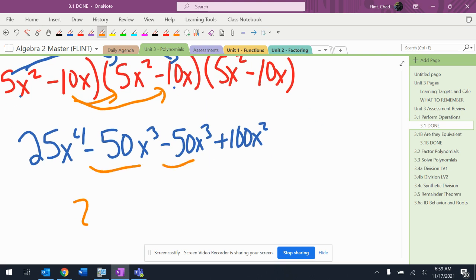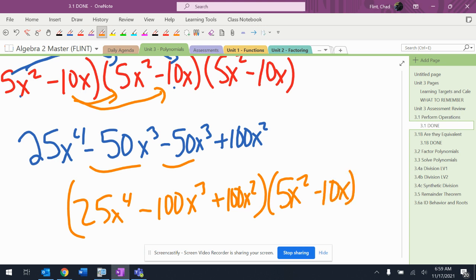Combine these middle two terms: 25x to the fourth minus 100x to the third plus 100x squared. And I've got to drag down that last parenthesis there.